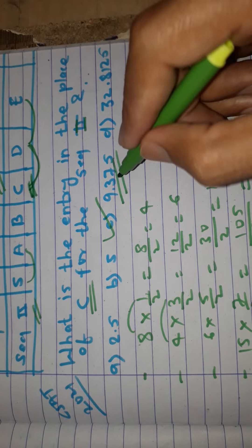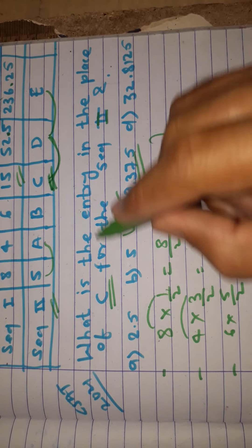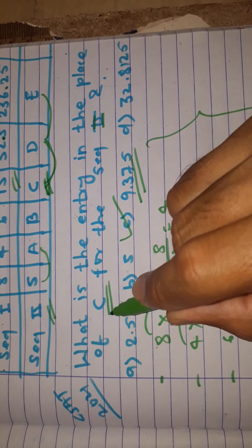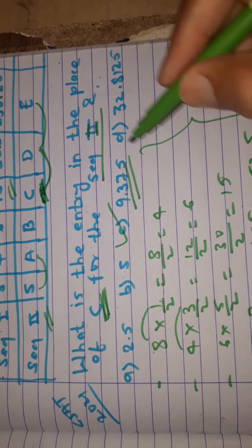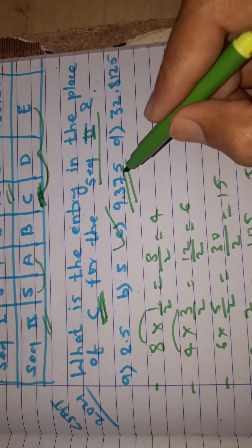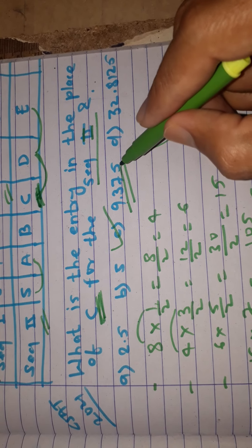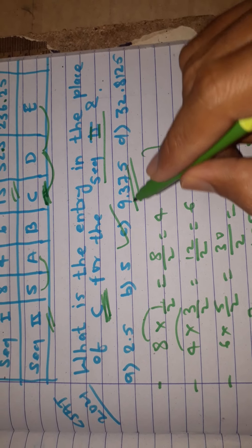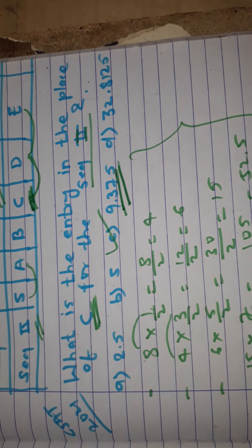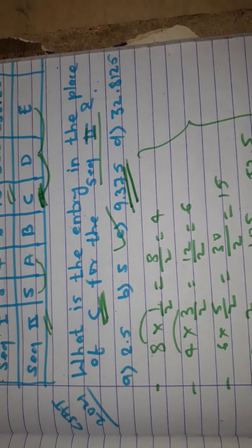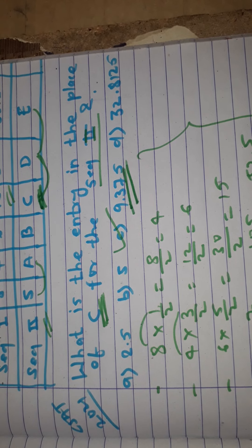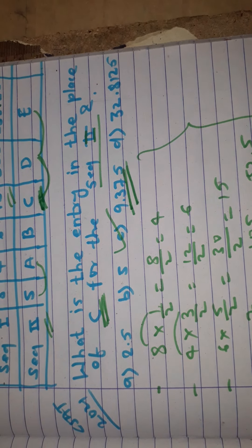The question asks what is the entry in the place of c. For sequence 2, the entry of c is 9.375. This is the answer, 9.375. I hope you understand the video. Thank you for watching.